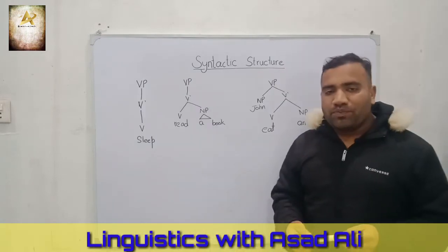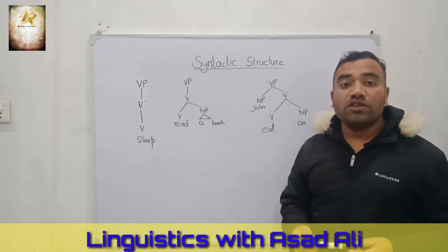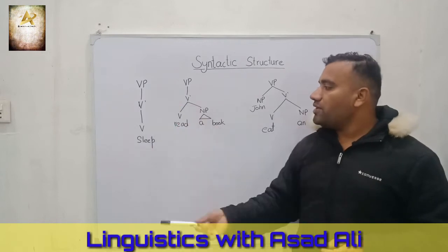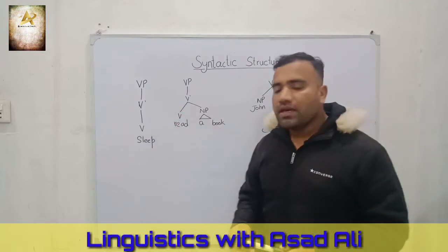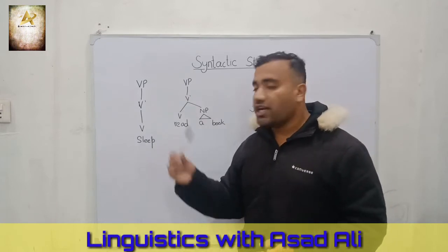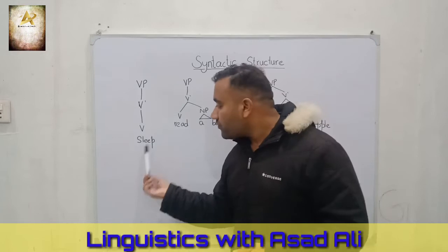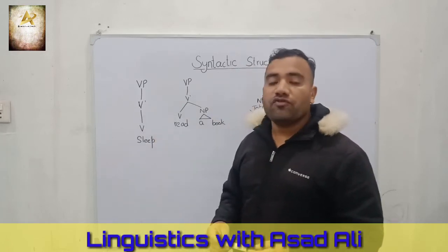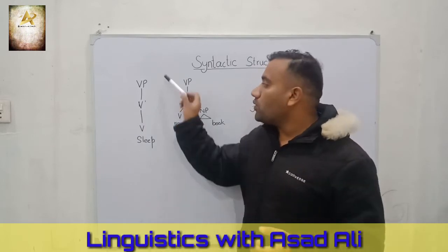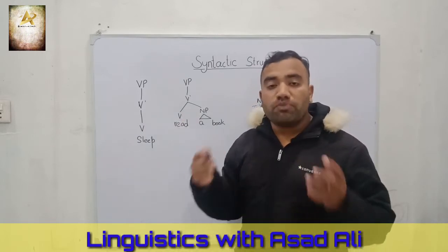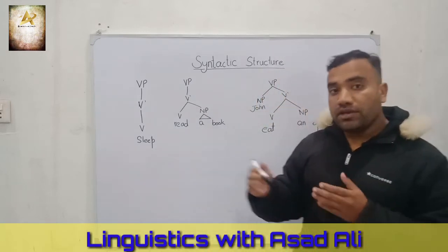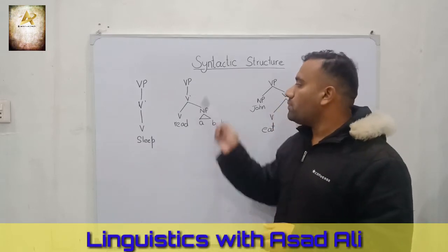Let's see the structure of VP — the verb phrase. The first structure of VP has the minimum level, where V is the head. The head word is 'sleep.' The intermediate level is V-bar, and the third is the maximum projection, that is VP. This whole phrase is being regulated by 'sleep.'